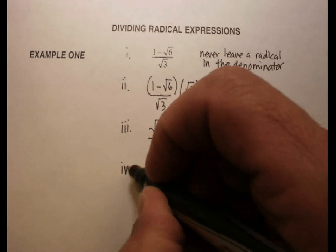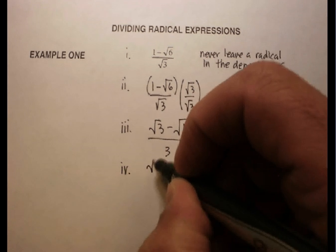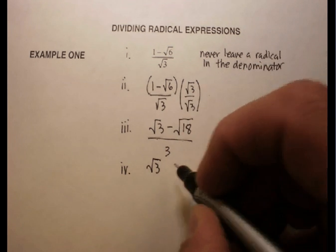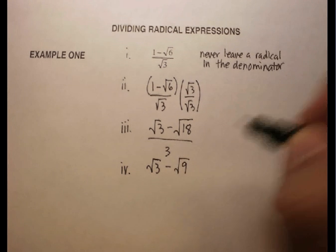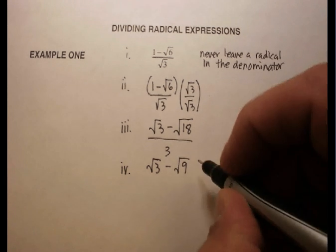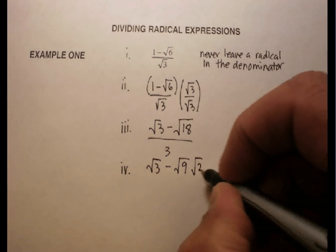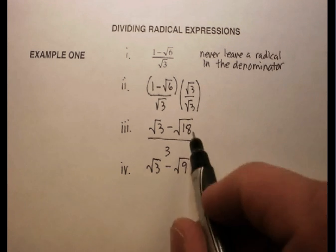Now you might notice that the square root of 18 actually has some simplifying that can be done there. So let's go ahead and try that. So I get radical 3, that stays the same, and I'm going to divide up radical 18 into a perfect square factor, radical 9 times radical 2, because radical 9 times radical 2 is radical 18.